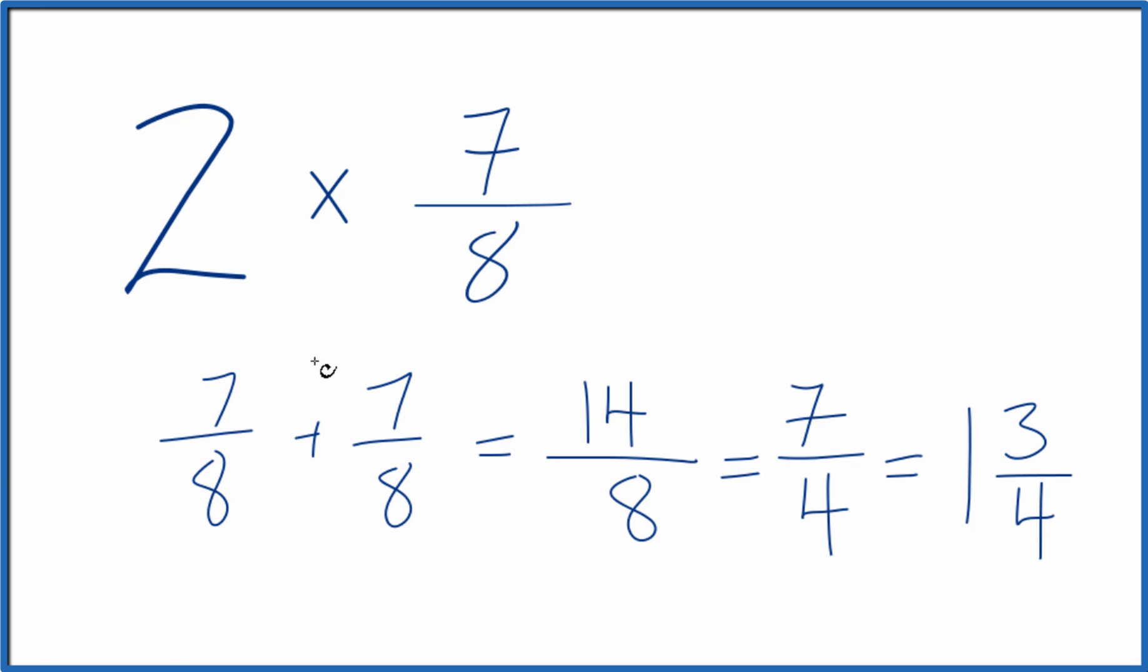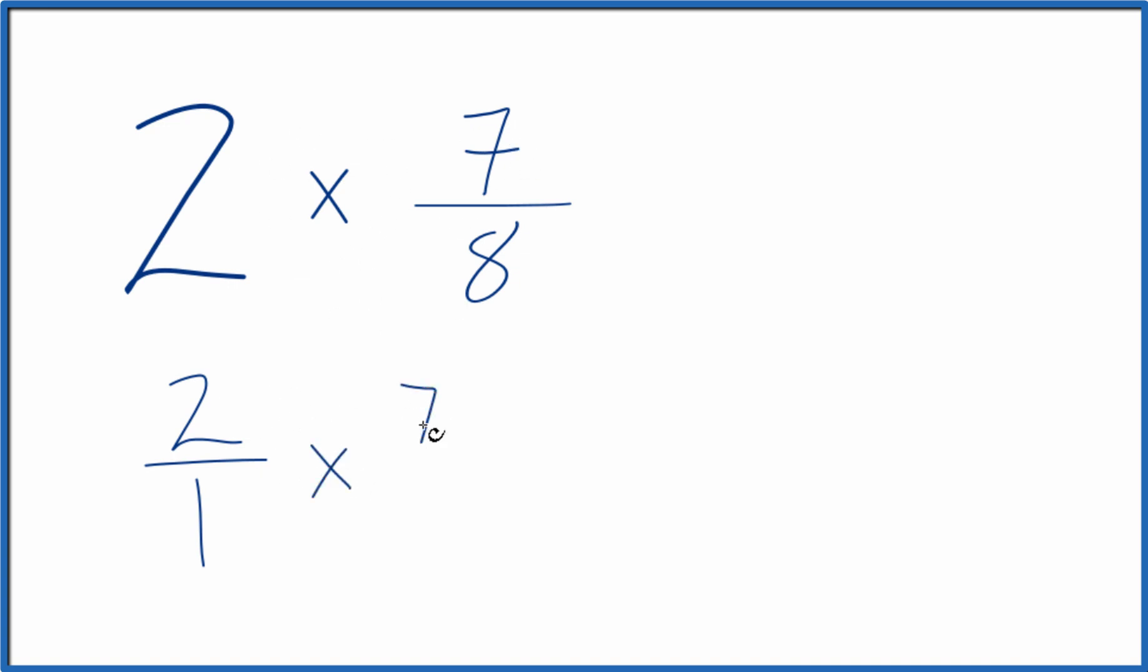There is another way we could figure out the answer to 2 times 7 eighths, like this. You could consider 2 to be 2 over 1. It's still 2 because we're dividing by 1, but now we have a fraction. And we can multiply that times 7 eighths.